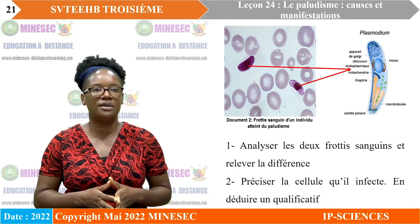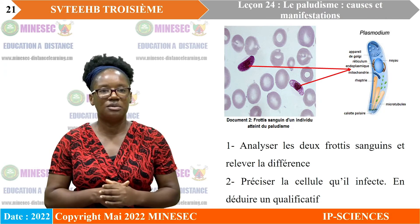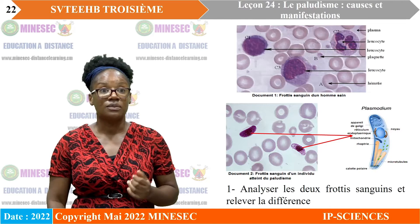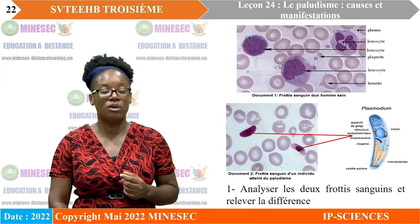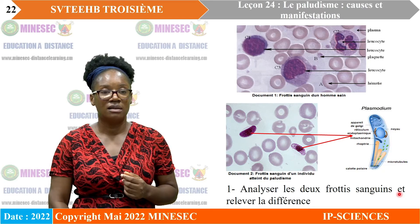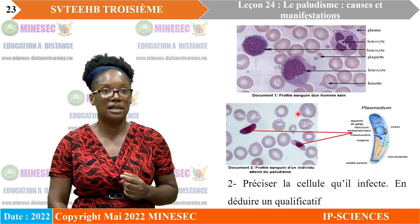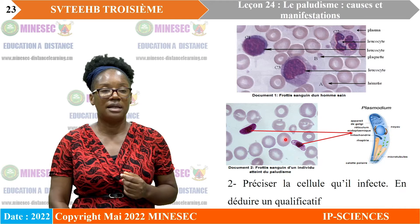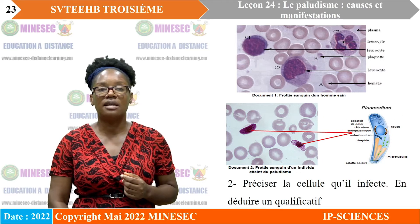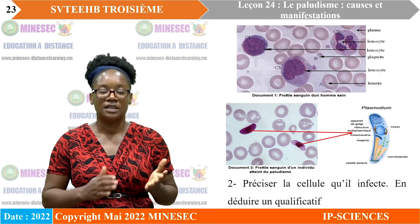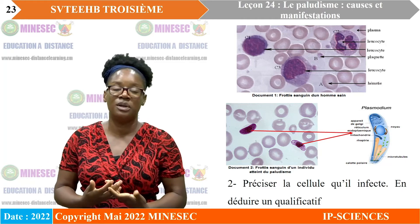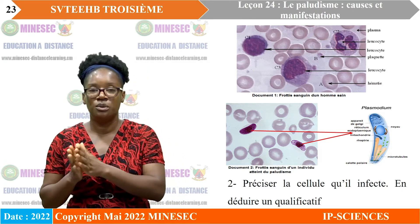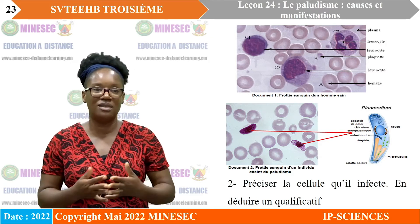Lorsqu'on a agrandi cet élément, il s'agit du plasmodium. La différence entre les deux frottis sanguins, c'est la présence de cet élément nouveau appelé le plasmodium. Le plasmodium est logé dans les hématies. Comme c'est un microbe qui vit dans les hématies, on va l'appeler hématozoaire, car c'est un protozoaire qui vit dans les globules rouges.